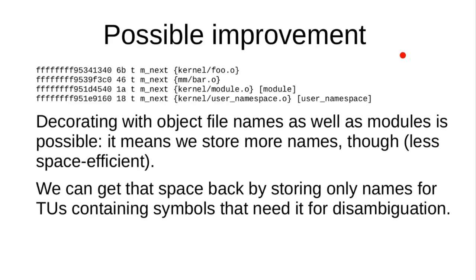How will this interact with separate module configuration? Separate out-of-tree modules are always modules which are not built into the core kernel, and all this stuff only applies to stuff built into the core kernel — we don't get the map file in any other situation. That said, it's perfectly possible to have ambiguous symbols in an out-of-tree module, so we should be decorating object file names there too, which probably means needing some of these sections in individual modules.